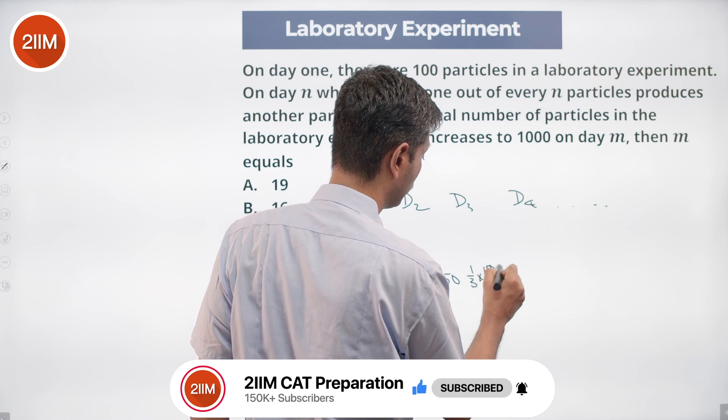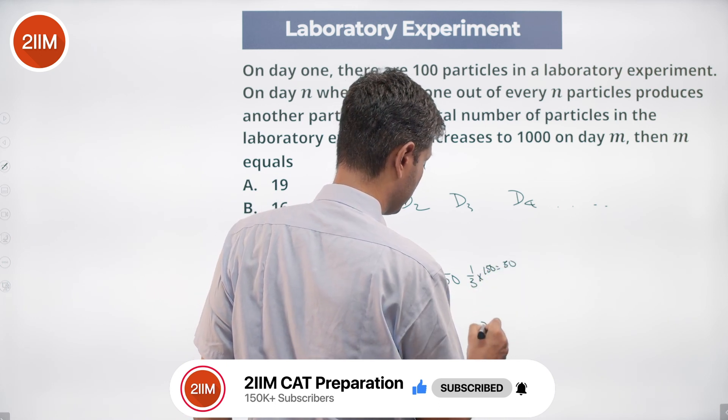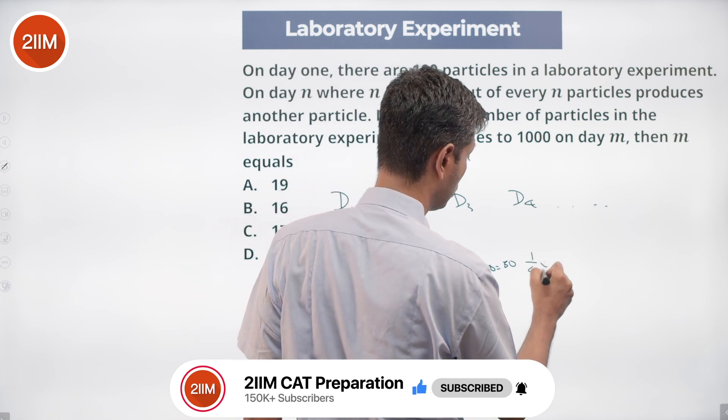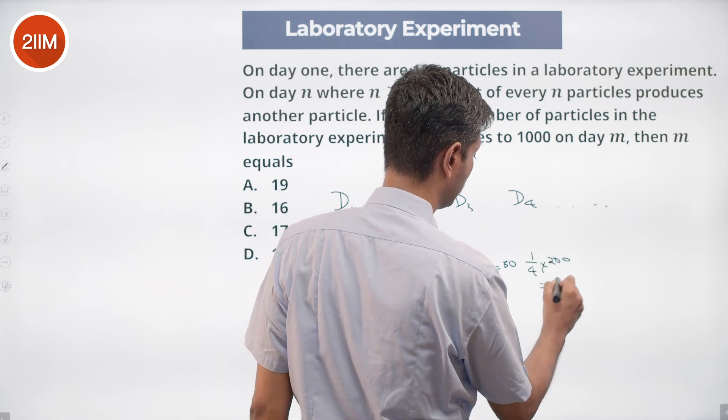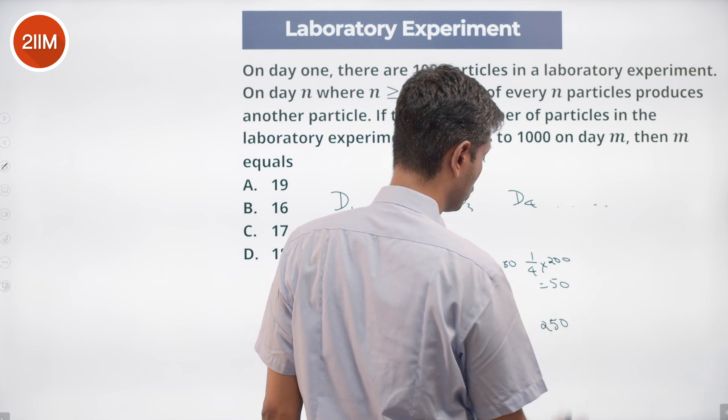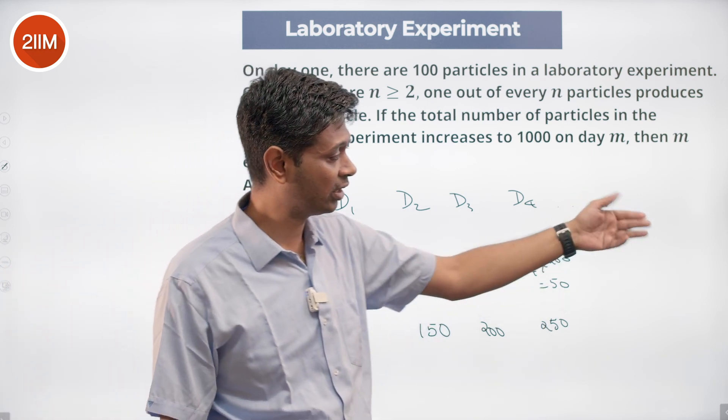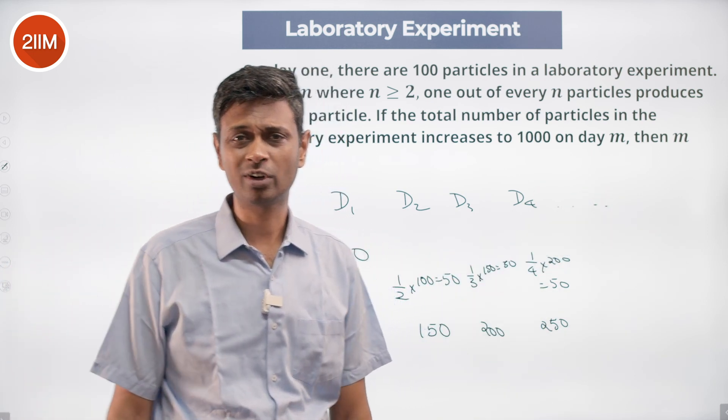Day four, what gets added? One fourth of 200, which is 50. This becomes 250. Day five, one fifth of 250 is 50, giving us 300. Day six, one sixth of 300 is 50, giving us 350, and so on. Quite simply, every day 50 particles get added.